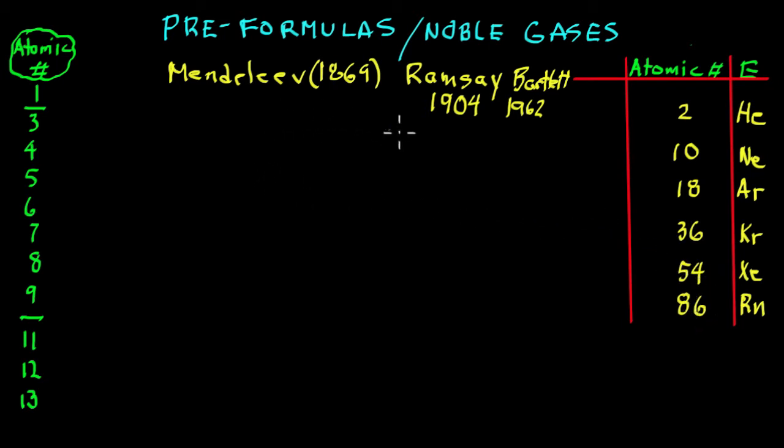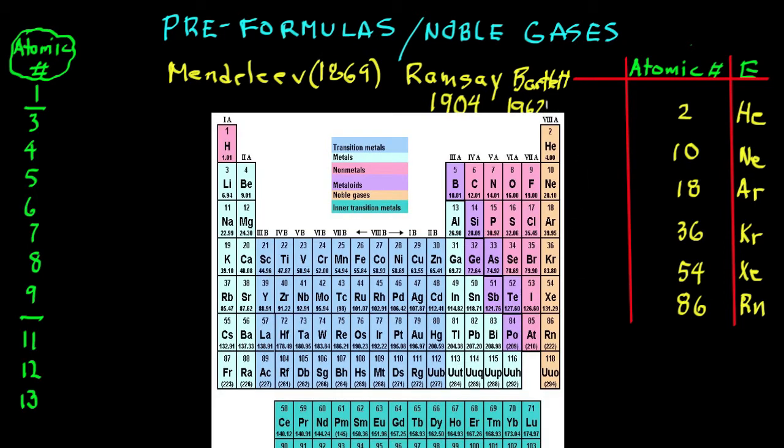This modern periodic chart you see that I'm putting up now shows that they're in group 18 of the modern numbering system on the far right side of the chart. You can't recognize any particular pattern here with these atomic numbers, but when you identify the electrons...